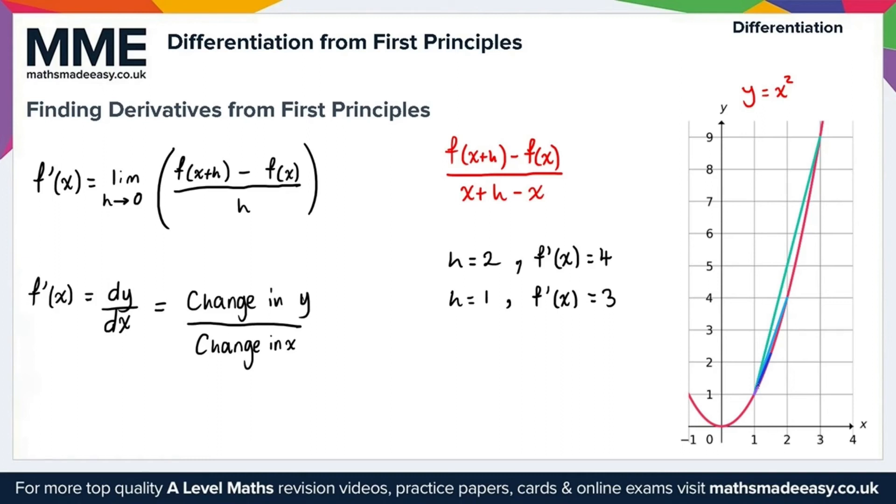This dark blue line here, that's when h equals 0.5, and here we obtain for f prime of x 2.5. And finally, this very tiny purple line here at the bottom is when h equals 0.1. And like we can see, as we're getting closer and closer to h tending to 0, our gradient is getting closer and closer to f prime of x, the required value here. So in that case, f prime of x simply gives us 2.1 there.